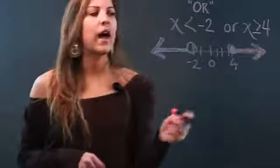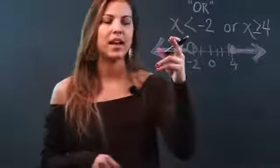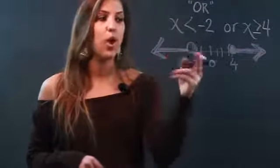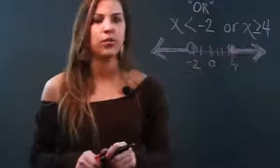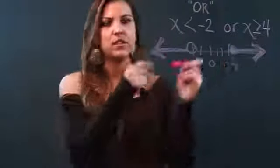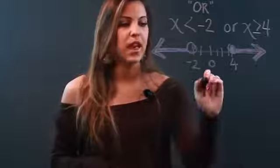This is the graph of all numbers where X can be less than negative 2 or X can be greater than or equal to 4. It's the union of these two inequalities. That's how you graph an OR.